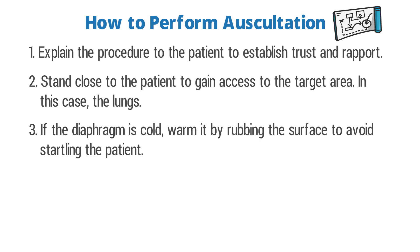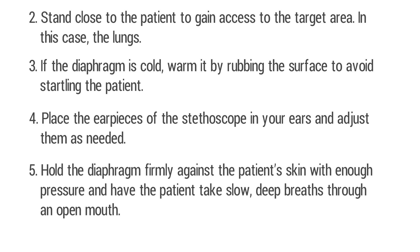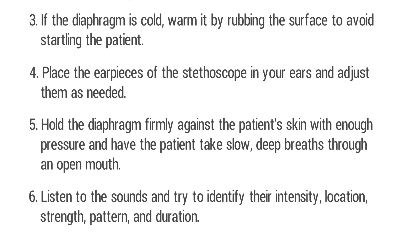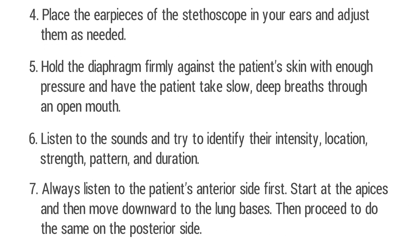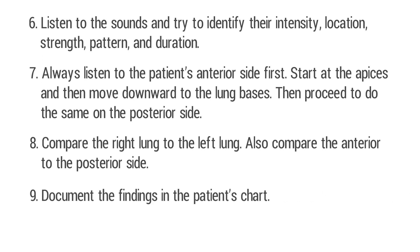Place the ear pieces of the stethoscope in your ears and adjust them as needed. Hold the diaphragm firmly against the patient's skin with enough pressure, and have the patient take slow deep breaths through an open mouth. Listen to the sounds and try to identify their intensity, location, strength, pattern, and duration. Always listen to the patient's anterior side first — start at the tops of the lungs then move downward to the lung bases — then do the same on the posterior side. Compare the right lung to the left lung and the anterior to the posterior side. Document the findings in the patient's chart.